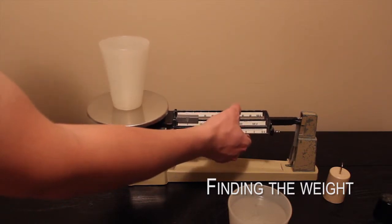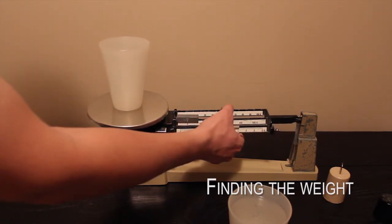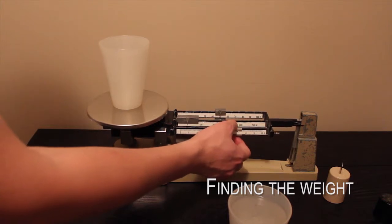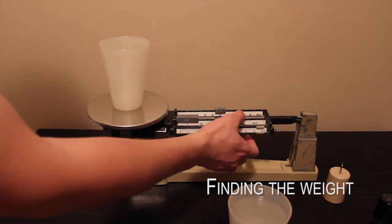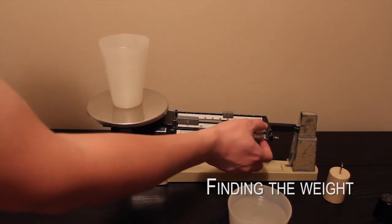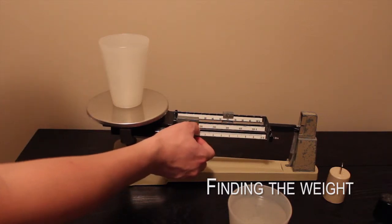Next, move the back horizontal beam's 10 gram weight, and adjust it until the balance pointer drops. Once it drops, move the weight to one level back on the 10 gram graduation.